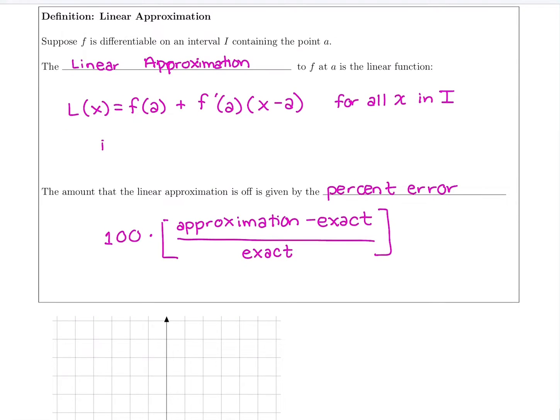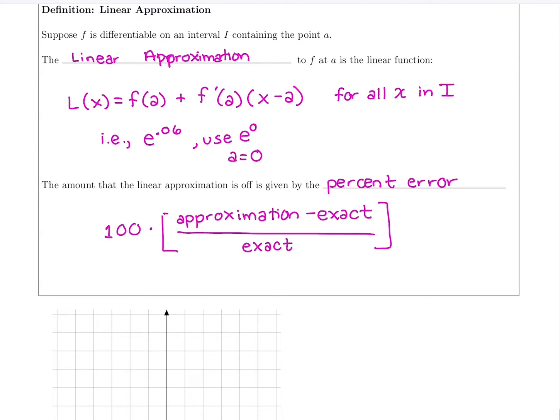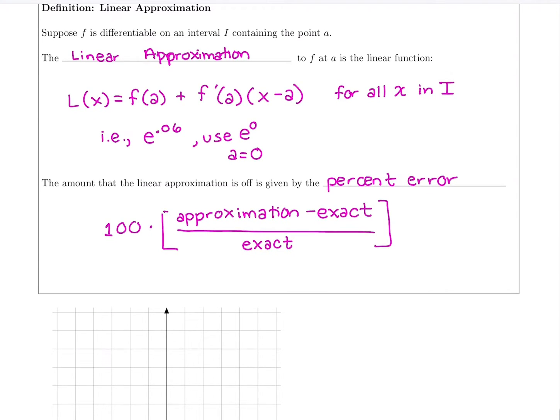So for example, if you want to figure out e to the 0.06, we're going to use the fact that e to the 0 equals 1. So we will choose a value that is close to the value we're trying to evaluate, and we should be able to calculate it without a calculator.